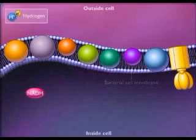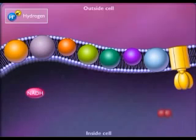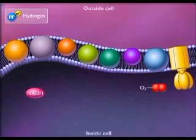A hydrogen consists of a proton and an electron. The electron transport chain consists of a series of special electron carrier proteins that shuttle electrons from NADH to a terminal electron acceptor such as oxygen.